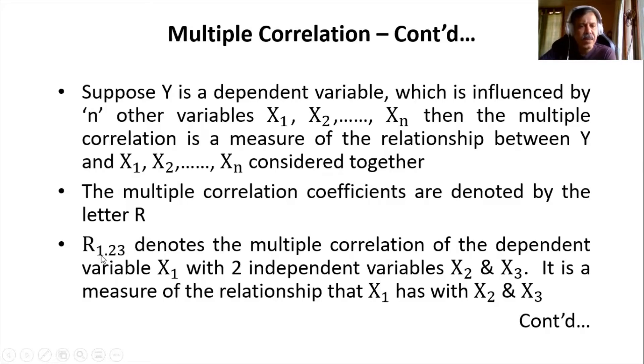So here x1 becomes the dependent variable, dependent on the independent variables x2 and x3. So that is what is meant by R1.23.